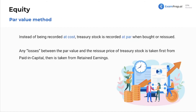Par value method: instead of being recorded at cost, treasury stock is recorded at par value when bought or reissued. Any losses between par value and the reissue price of treasury stock are taken first from paid-in capital, then from retained earnings.